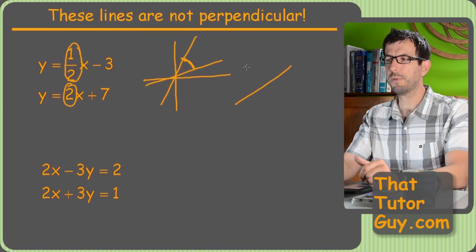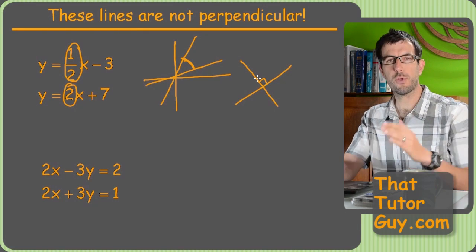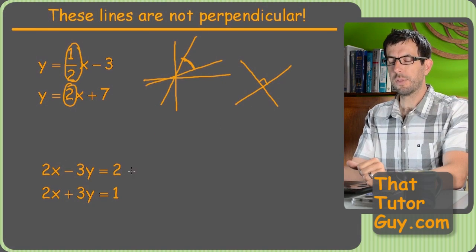Got to have a negative sign. You know, if one's going up to the right, the other one's got to go up to the left in order for them to have a right angle. If they're both going up to the right or down to the right, then there's no way they're perpendicular.